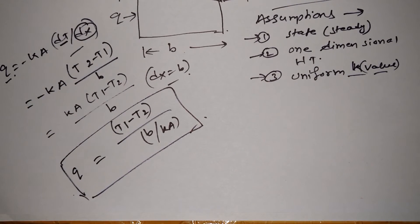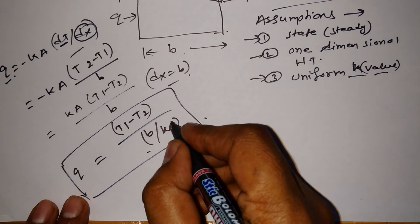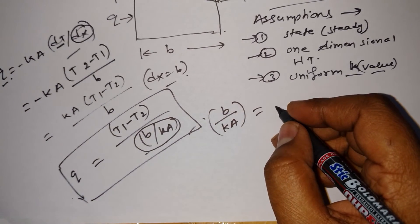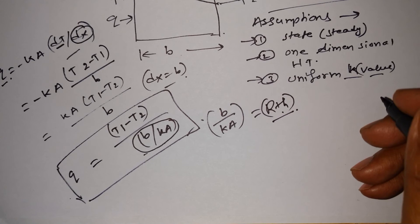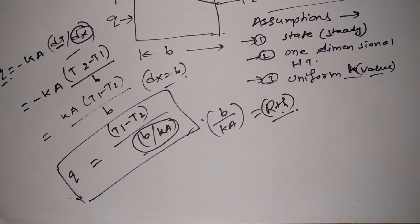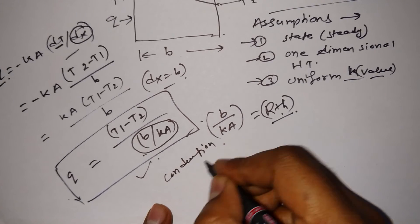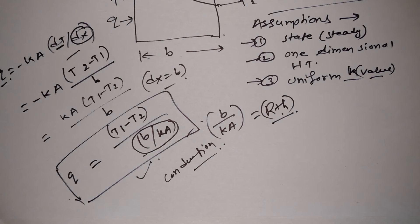From my next lecture I will use another pen so you can more easily understand what I'm writing. Now, B/kA is known as thermal resistance, denoted as R_th. This equation is applicable only in the case of conduction, so if you are studying conduction you need to understand this.